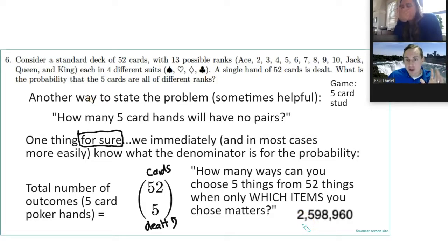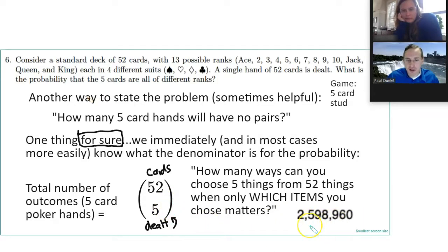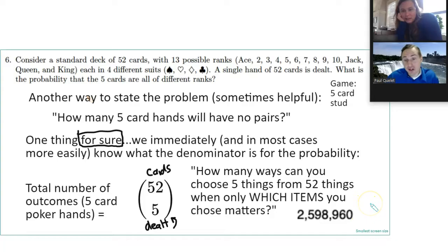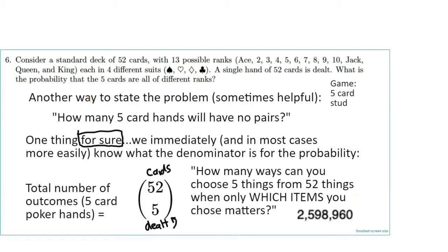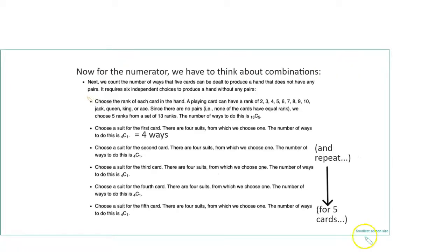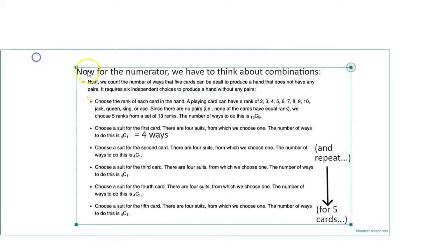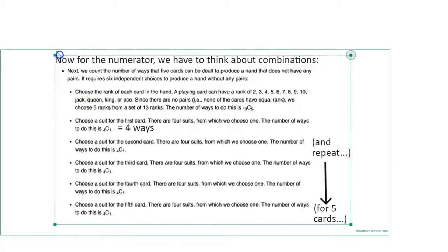If you work that out on your calculator, it's almost 2,600,000 ways — that's the total number of five-card poker hands in five card stud. Now let's be a little more specific and think about the numerator.